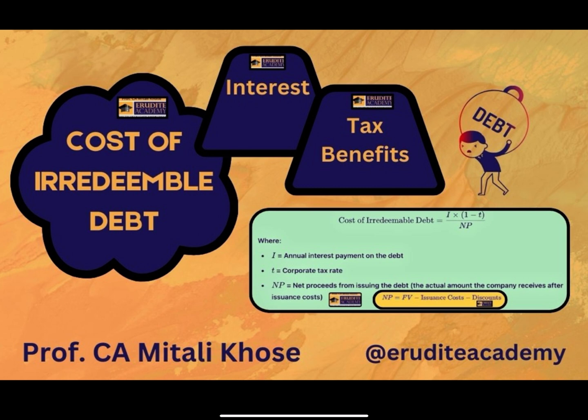As we just discussed, in case of irredeemable debt, only interest will be paid. In almost all cases, interest comes with a tax benefit. When an organization pays interest on its debt, it will be first reduced from earnings before interest and taxes, and after that tax is calculated. Hence, whenever there is payment of interest, the organization will get a tax benefit. While calculating cost of irredeemable debt, we will only consider the interest component as there is no repayment of principal amount. On this interest also, we will get a tax shield.